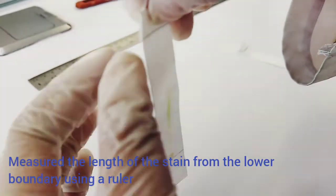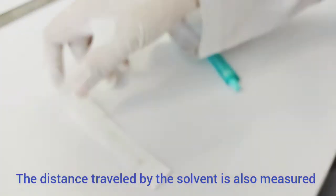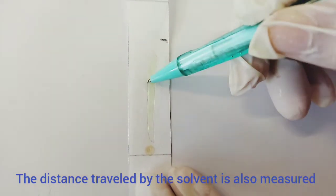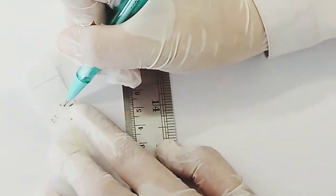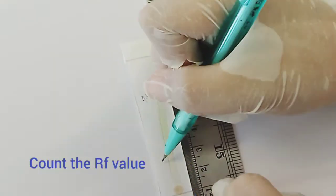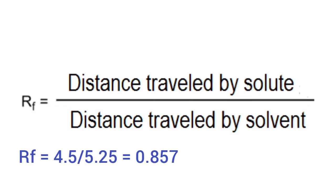Measure the length of the stain from the lower boundary using a ruler. The distance traveled by the solvent is also measured. 4.5 is the distance traveled by the solute and 5.25 is the distance traveled by the solvent, so we get the RF value of 0.857.